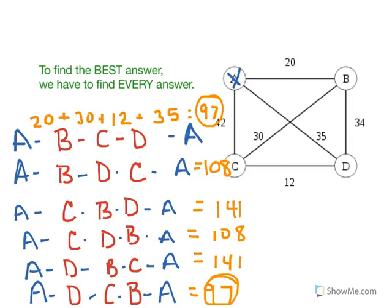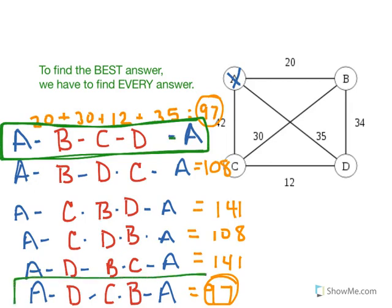But what I want you to notice about this tour is the progression of cities. So in this first tour, which has a cost of 97: A-B-C-D back to A. Notice this other tour which also has the cost of 97 - if we read it backwards, A-B-C-D-A matches exactly in the reverse order.